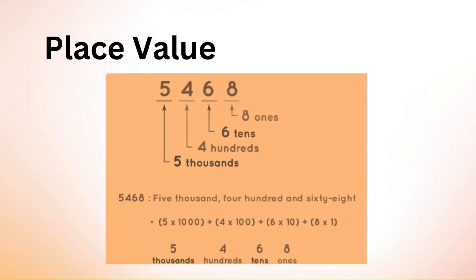Place Value determines the value of each digit in a number based on its position. These positions start from the unit's place, that is, the one's place. The order of place value of digits in a number from right to left is expressed as ones, tens, hundreds, thousands, ten thousands, and so on.